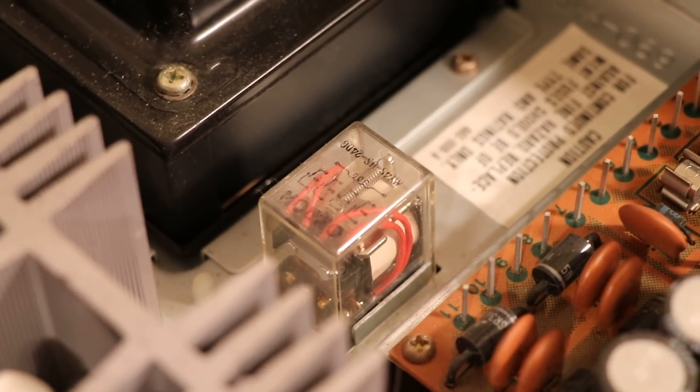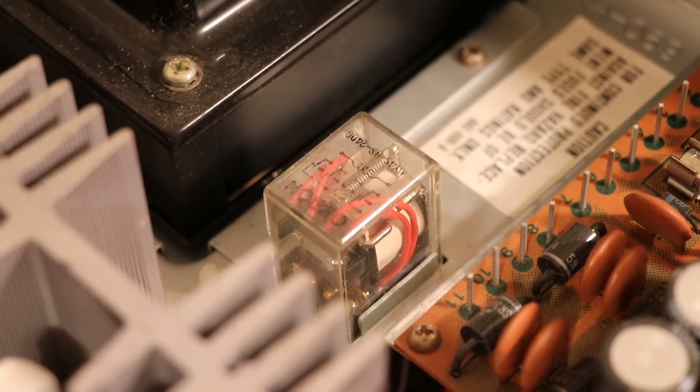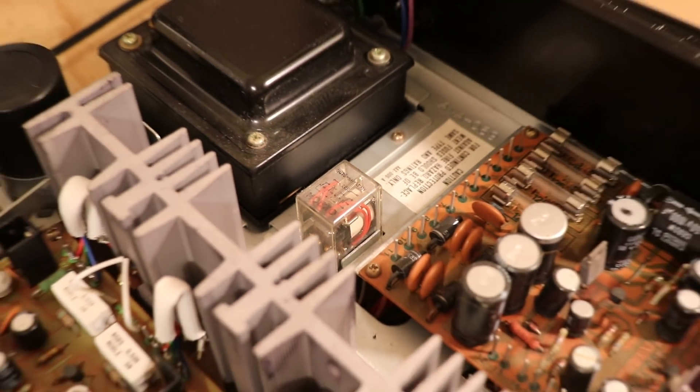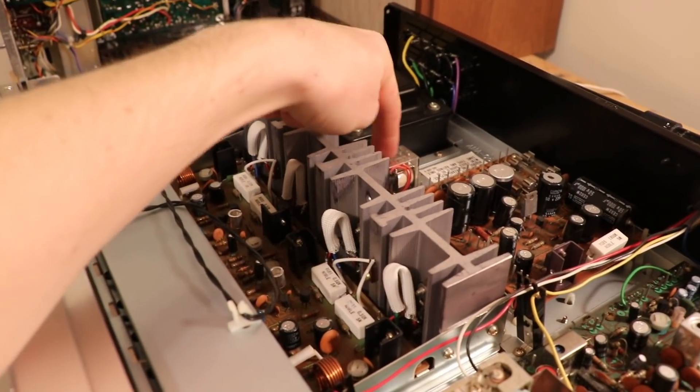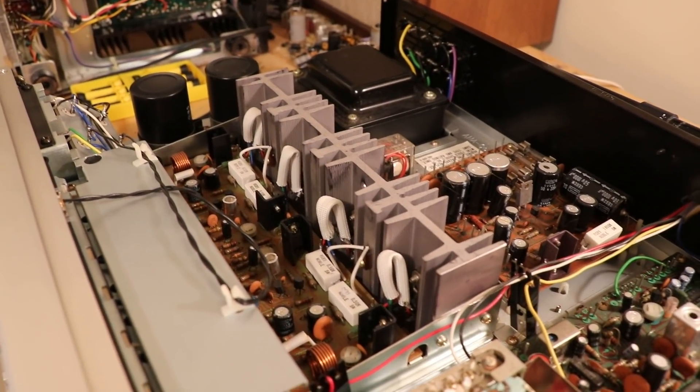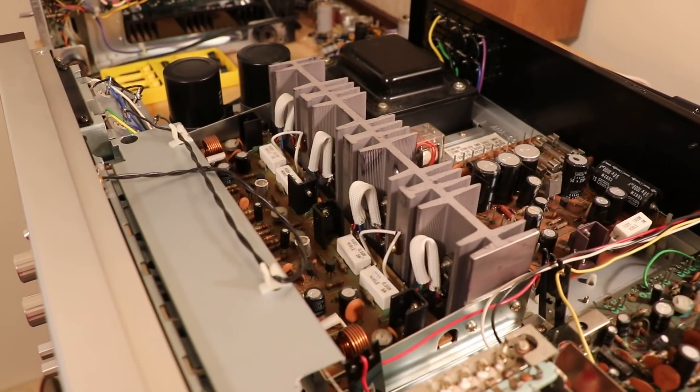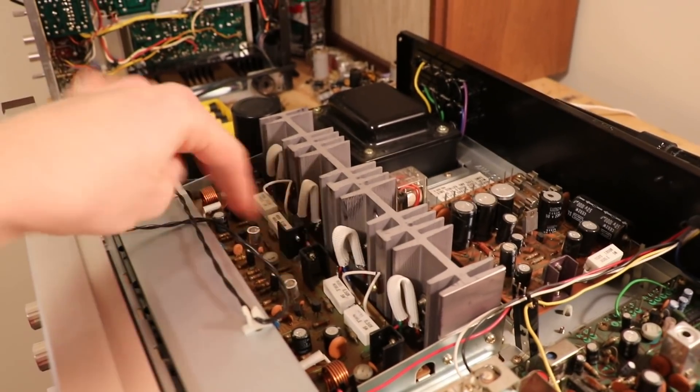because they've got this thing right here. This is a protection relay. This is what makes the little click sound when you turn on your receiver if it's equipped with one. The Pioneer SX636 and below does not have this. So there's nothing on the receiver to protect your speakers from failures inside of here.